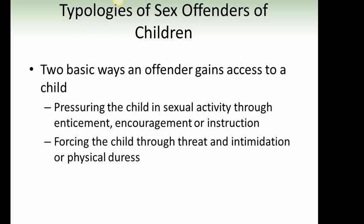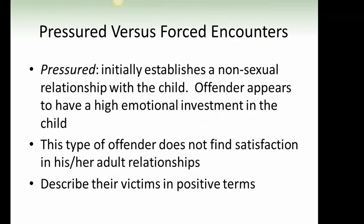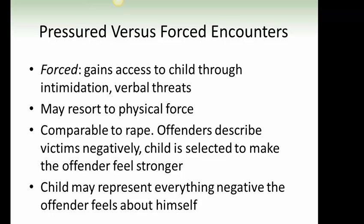Typologies of sex offenders of children: two basic ways an offender gains access to a child — pressuring through enticement, encouragement, or instruction; or forcing through threat, intimidation, or physical duress. In pressured encounters, the offender initially establishes a non-sexual relationship, appears to have high emotional investment in the child, does not find satisfaction in adult relationships, and describes victims in positive terms. In forced encounters, the offender gains access through intimidation and verbal threats, may resort to physical force, is comparable to rape, describes victims negatively, and selects a child to feel stronger — the child may represent everything negative the offender feels about himself.